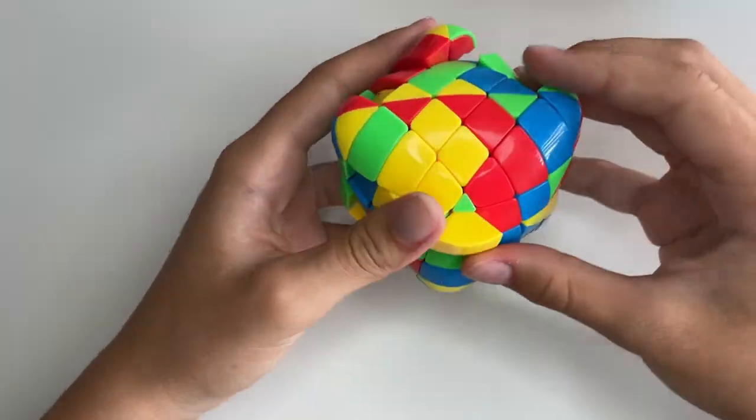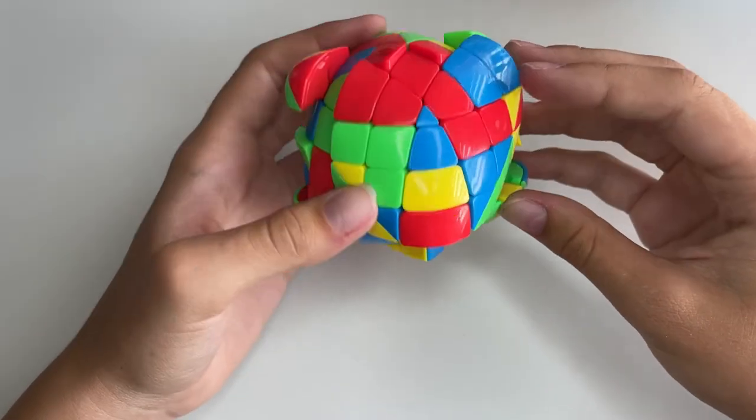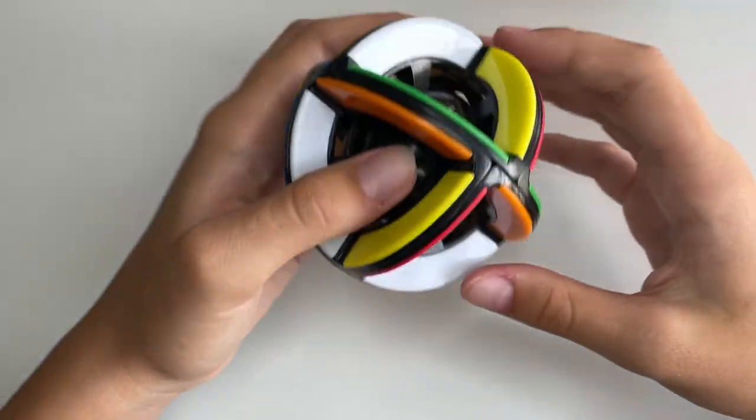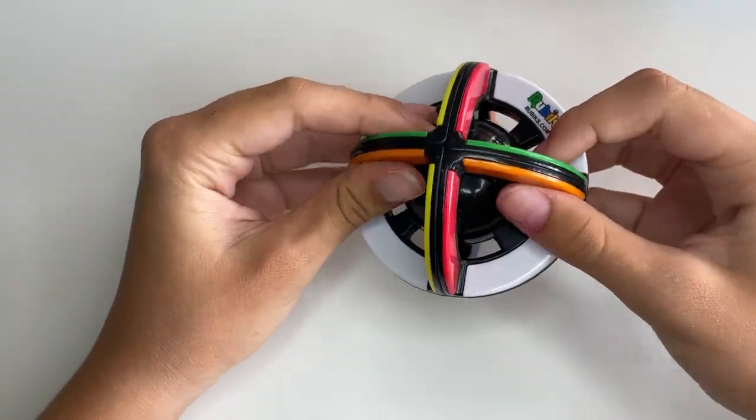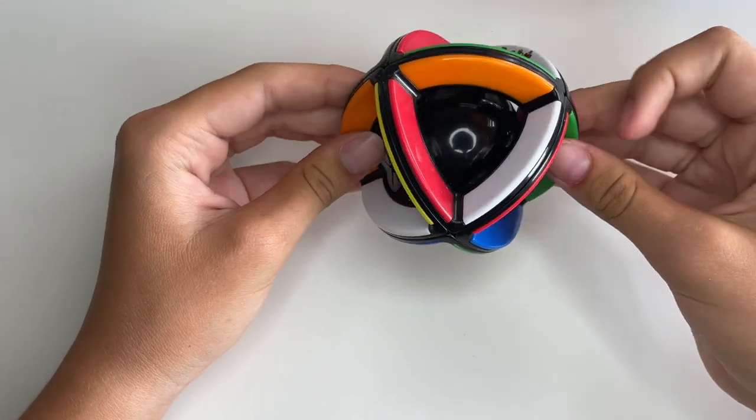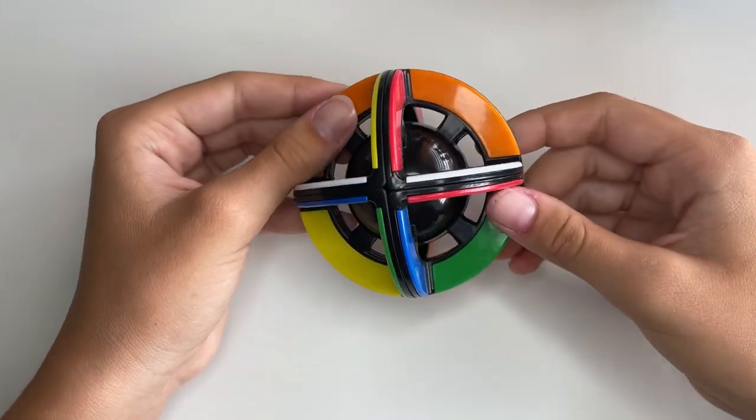This is the Qi Master Morphix 5x5. And just no. This is the Rubik's Void Cube. It's really fun to solve. Although, there are limited tutorials online. I made one myself. And you can go check that out if you'd like.